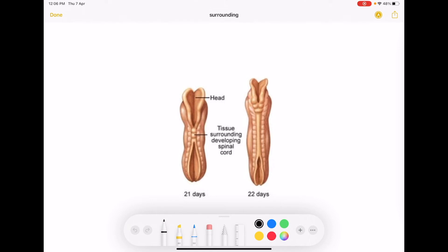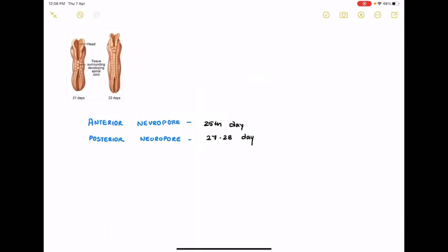So the opening that you can see at the top over here this is called the anterior neuropore and the opening that you see below it's called the posterior neuropore. The anterior neuropore has to close on time for the brain to develop normally and the posterior neuropore has to close normally at the right time for the development of spinal cord. The anterior neuropore normally closes by 25th day after fertilization and the posterior neuropore closes on 27th to 28th day after fertilization.